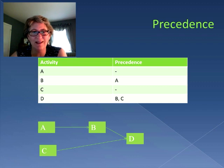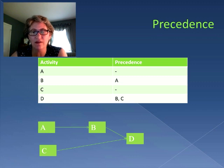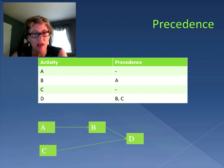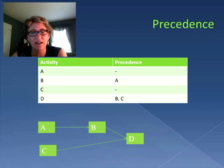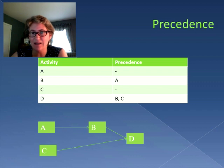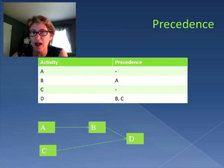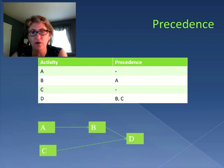Sometimes you'll see precedence in a table. Here we have four activities A through D with a precedence listing. Activity A has a dash, showing nothing has to come before it. Activity B requires A. Activity C has nothing needed before it. But activity D needs both B and C. In the diagram, A and C — which have no preceding activities — start it off. B requires A, so there's an arrow from A into B. And activity D requires both B and C, so those two arrows come together into D.